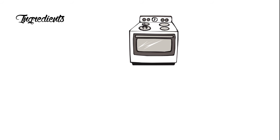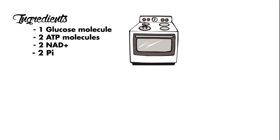So if you look at glycolysis like baking a cake, your ingredients include one molecule of glucose, two ATPs, two NAD+, two inorganic phosphates, and four molecules of ADP.